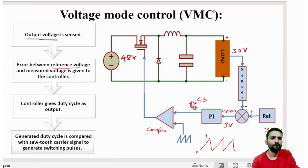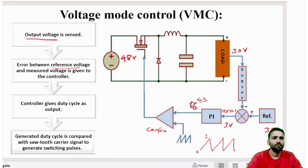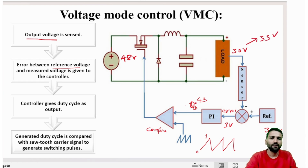To summarize voltage mode control: the load voltage is measured and the reference voltage is given. We subtract them to generate an error, which is given to the PI controller. The PI gives an output corresponding to the error — if the error is zero it keeps the output the same, but if error appears it adjusts the switching until the output voltage reaches the reference, e.g., from 30 V up to 33 V. The comparator generates the binary 0 and 1 switching pulses, where 1 means ON and 0 means OFF.